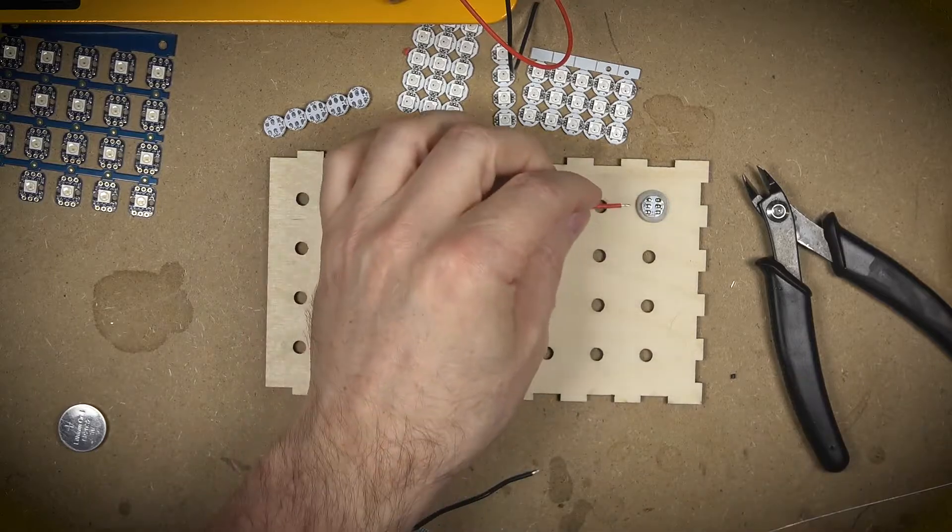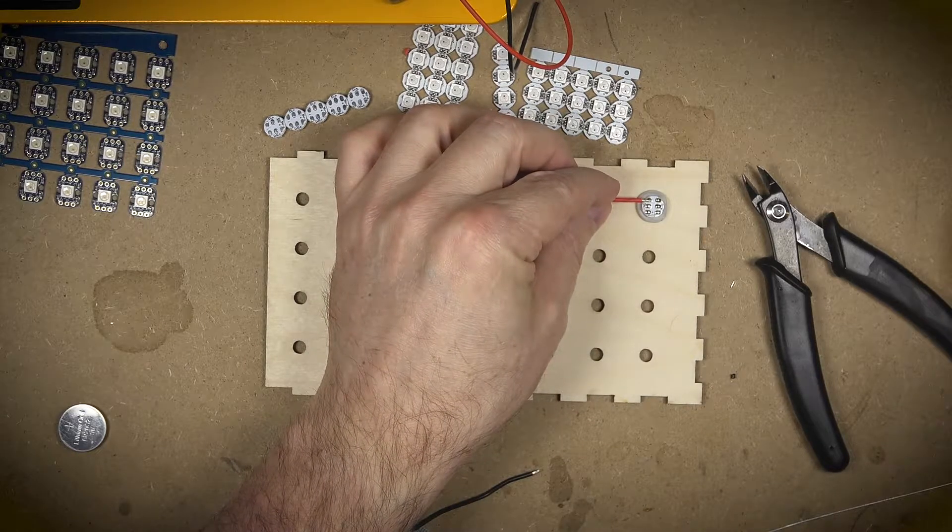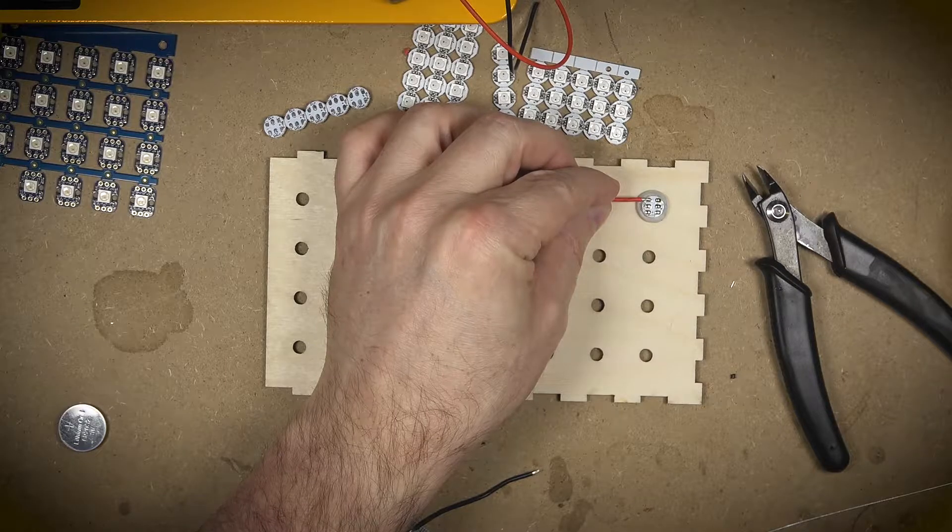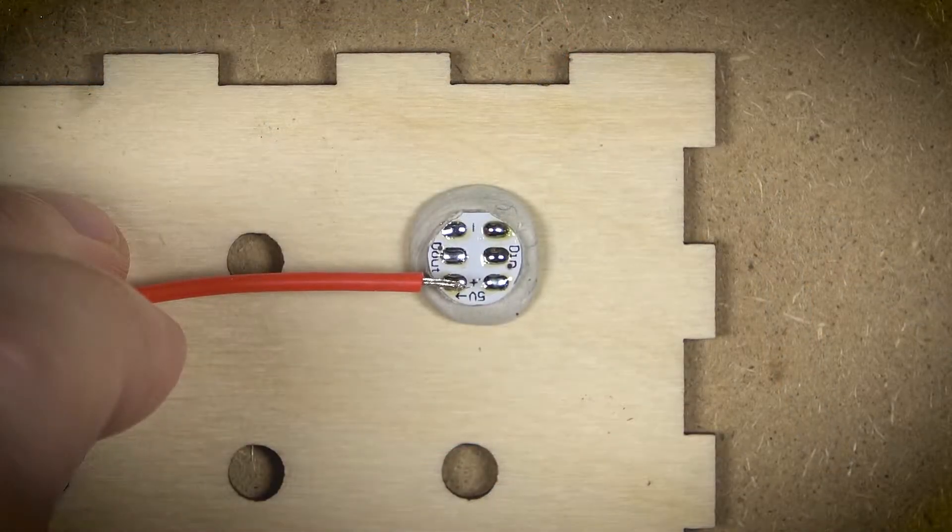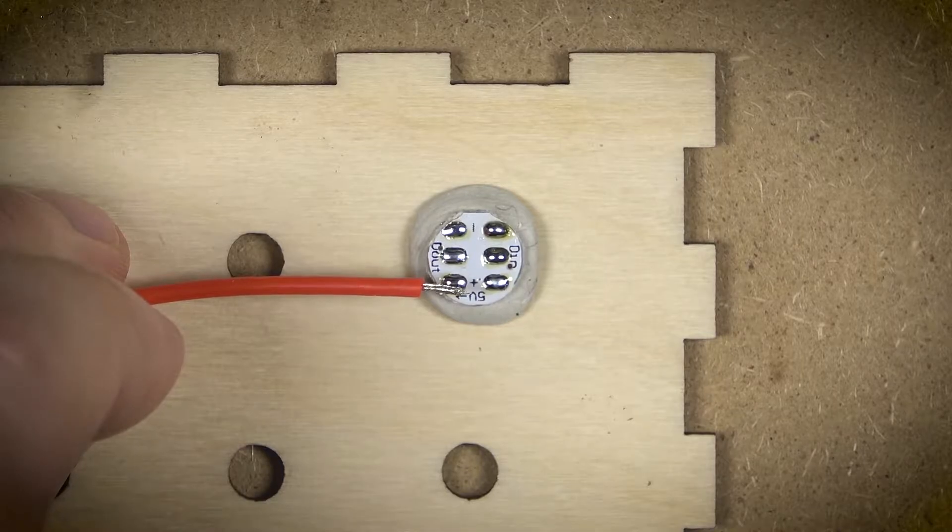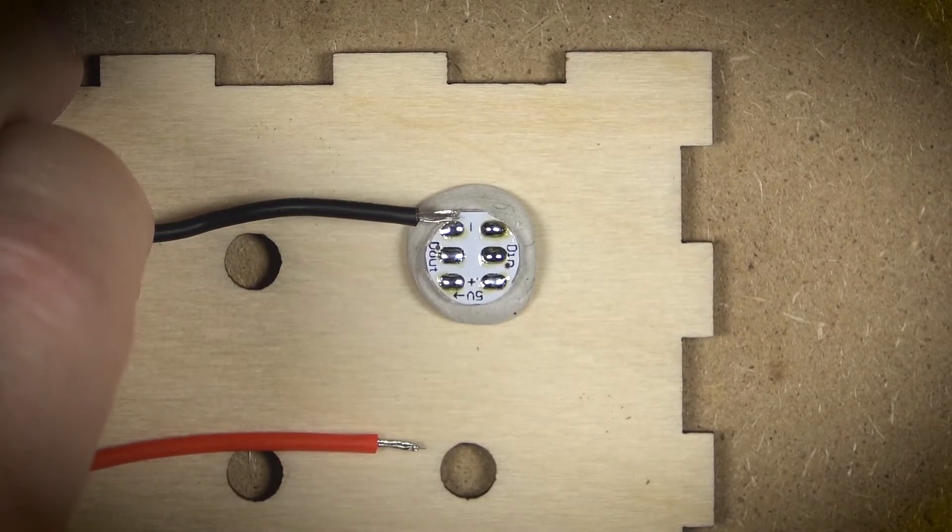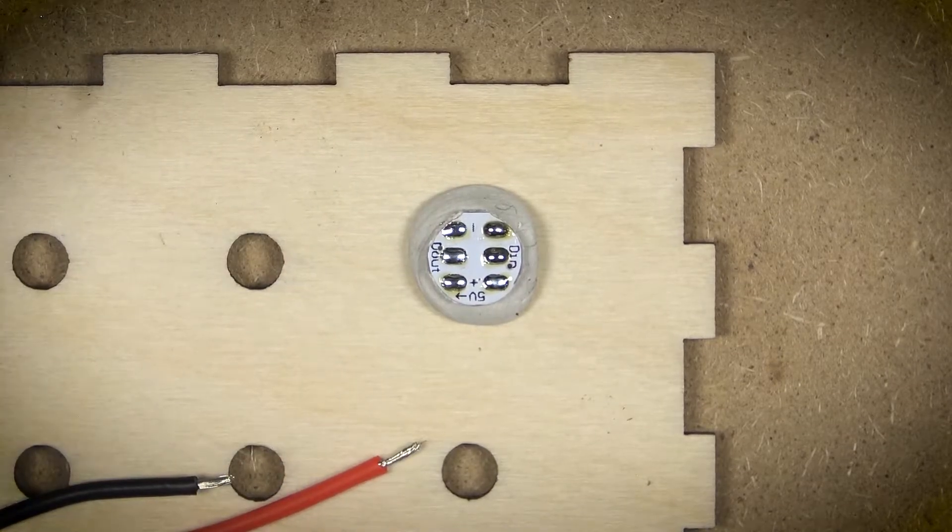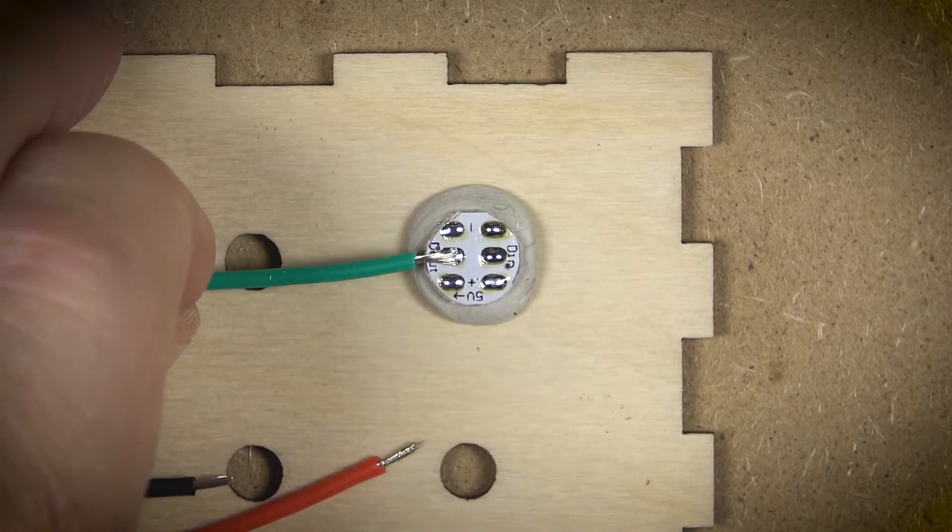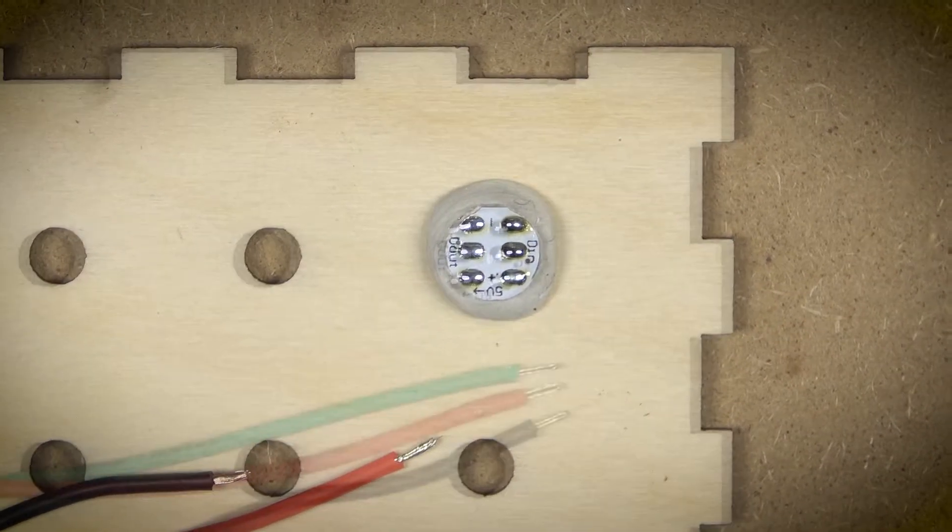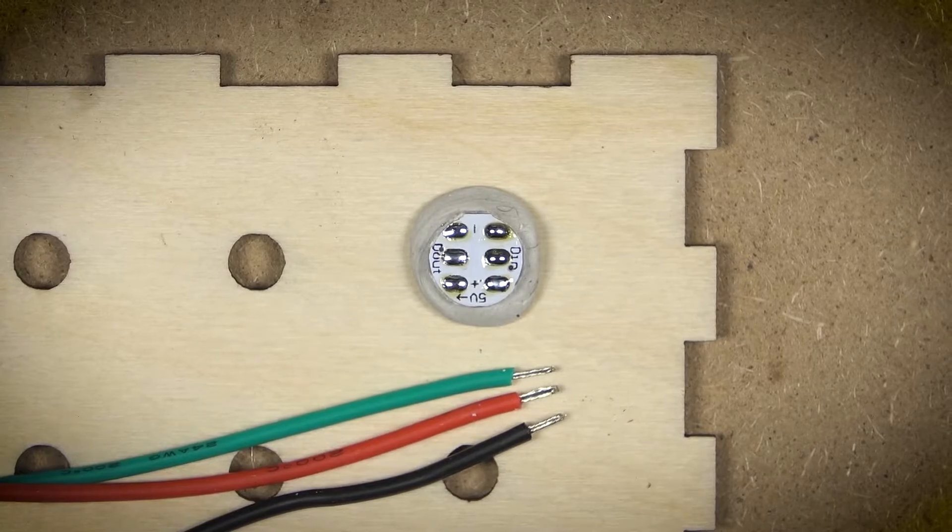When I strip the ends, I'm really trying to strip just the amount that's the equivalent length of the solder pad. I don't want to have too much wire exposed because I don't want to bridge the connections. That could be bad especially on the data connections. I need a clean break between the in and out and the same is true for the positive and negative terminals. I really want this to be a very clean connection.